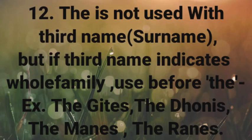Rule 12: 'The' is not used with a person's surname alone. But if the surname indicates the whole family, use 'the' before it in the plural form. For example: the Gites, the Dhonies, the Manmanes, the Ranes — meaning the Gite family, the Dhoni family, the Manes family, and the Ranes family.